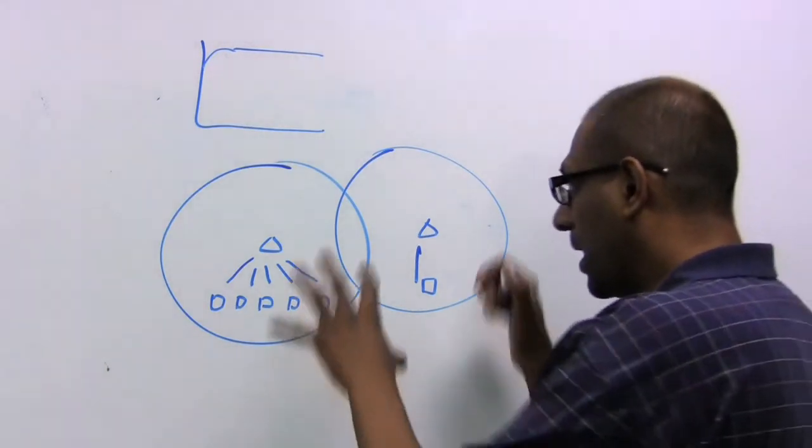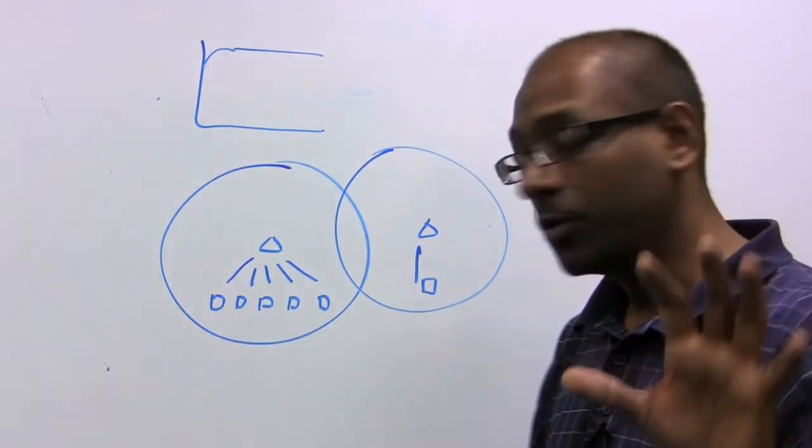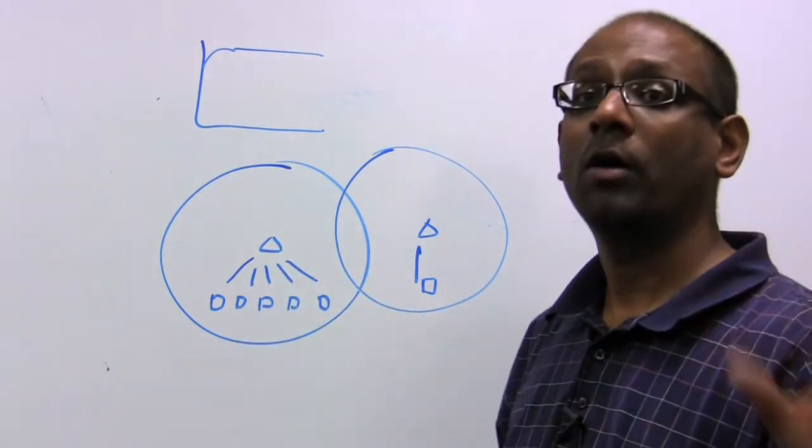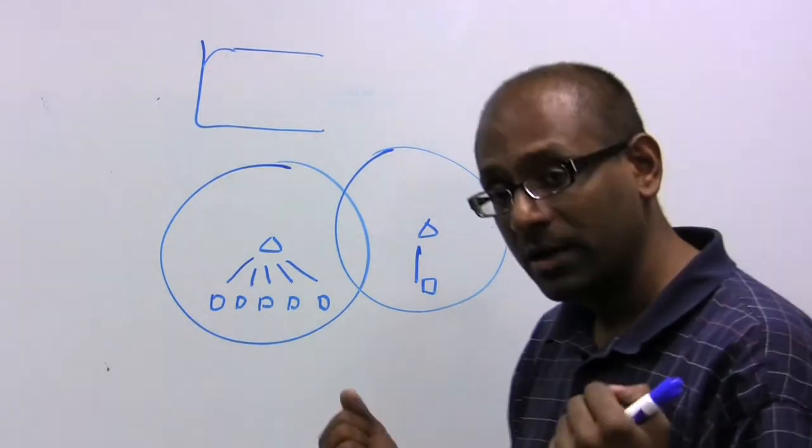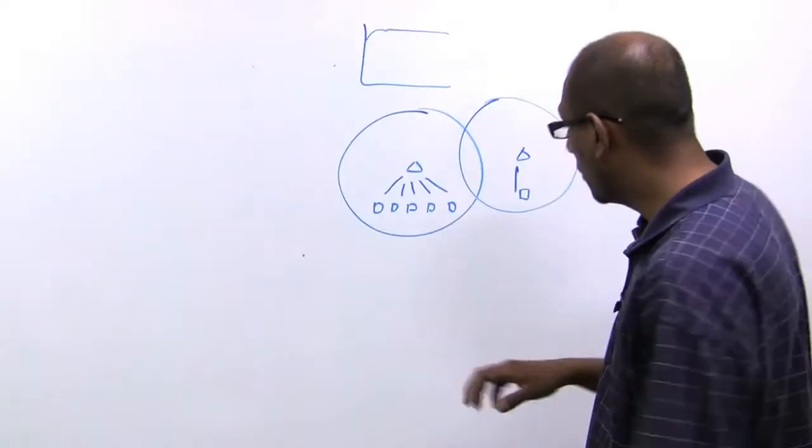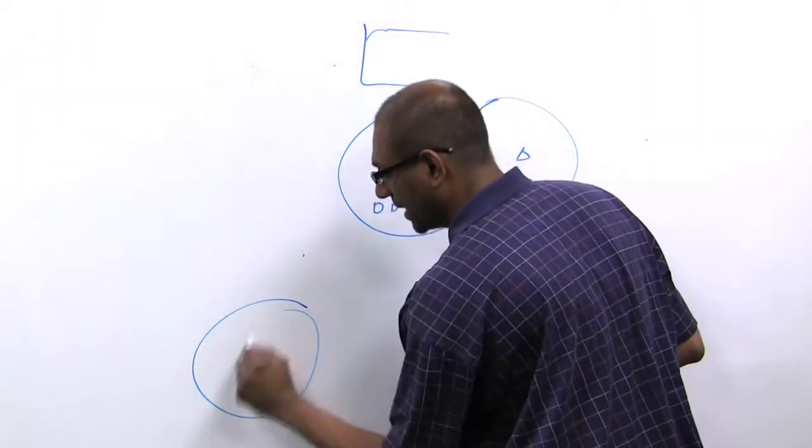So notice that in a multi-access point scenario, whether you put these access points on the same channel or different channels, you really don't have enough channels to effectively take away co-channel interference. So even if your neighboring access point doesn't contend with you, some far away access point might be.